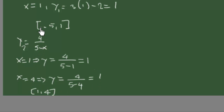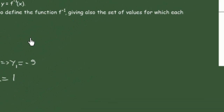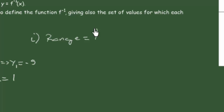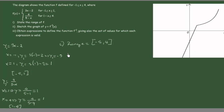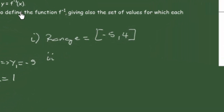Putting them together, the range goes from -5 to 1, and from 1 to 4, so the overall range of our function is [-5, 4]. Now for the second question, we want to find the inverse of the function and graph it, and we will do this in pieces.